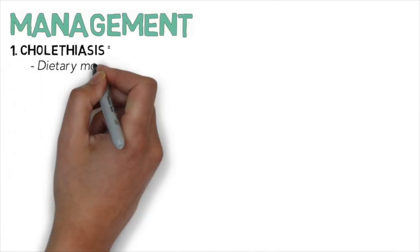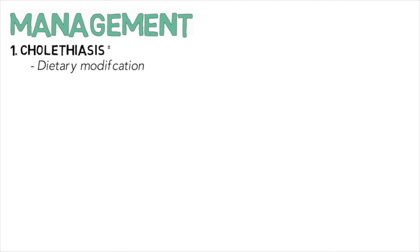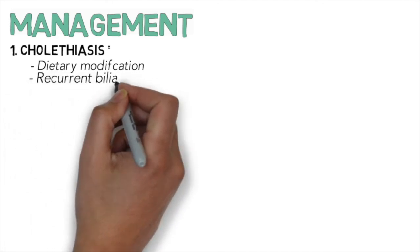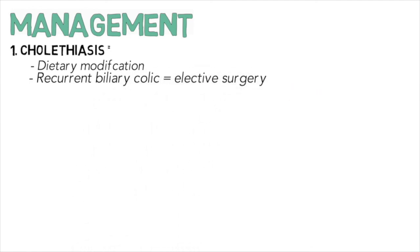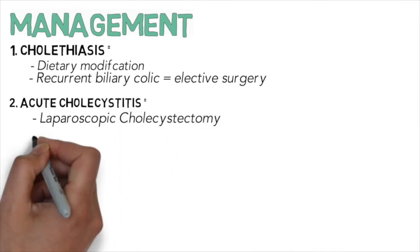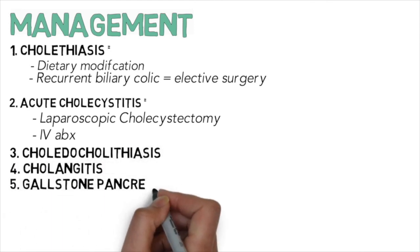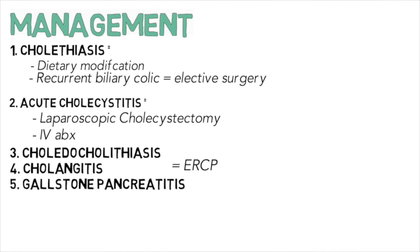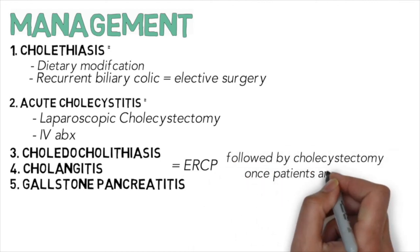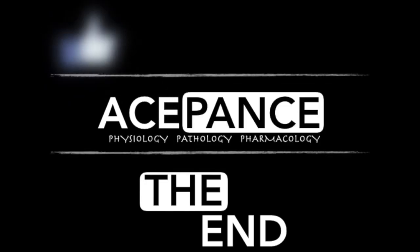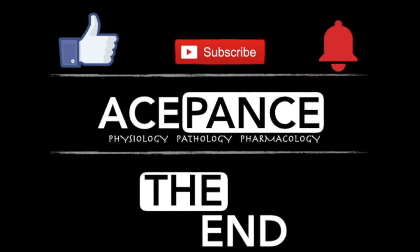For management: in patients with cholelithiasis, dietary modification should be tried first, but if recurrent biliary colics persist, elective laparoscopic cholecystectomy is recommended. In acute cholecystitis, laparoscopic cholecystectomy with IV antibiotics is recommended. For choledocholithiasis, cholangitis, suppurative cholangitis, and gallstone pancreatitis, ERCP should be performed to remove the stones, followed by laparoscopic cholecystectomy — usually during the same admission to avoid recurrence. That marks the end of the video; please like, subscribe, and hit the notification bell for future videos.